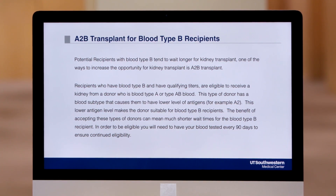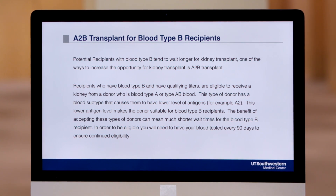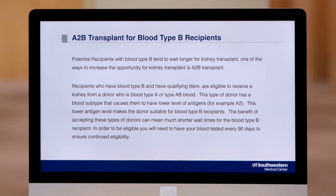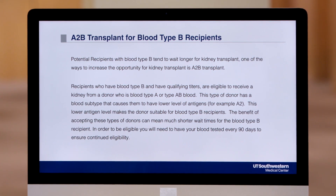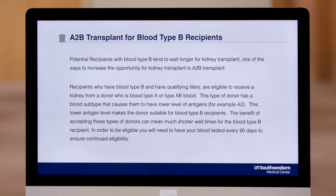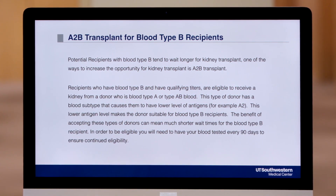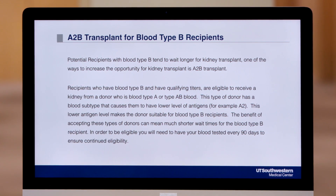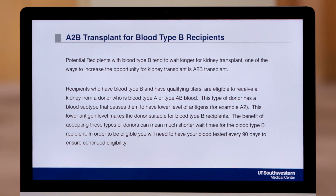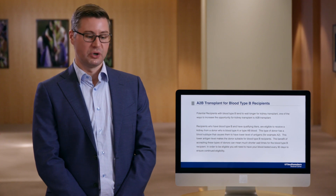If the blood type B recipient has low titers of antibodies against blood group A and the donor is the subtype of A2 blood group, we're actually able to do this transplant without any additional medication or preparation. This is possible because the A2 subtype is poorly and minimally expressed on the donor kidney, so there's very little likelihood that the recipient will have a reaction to this donor.